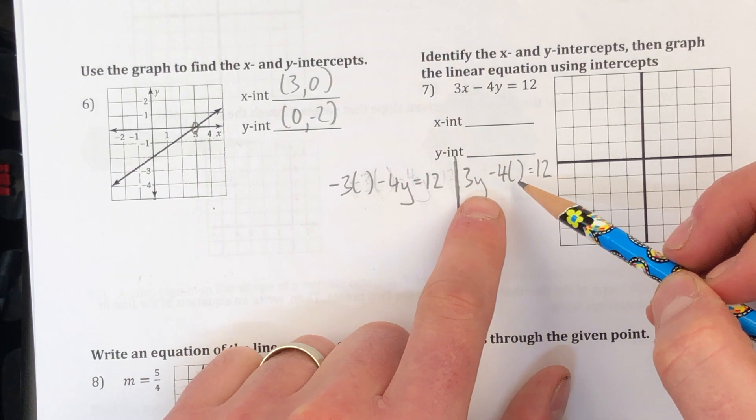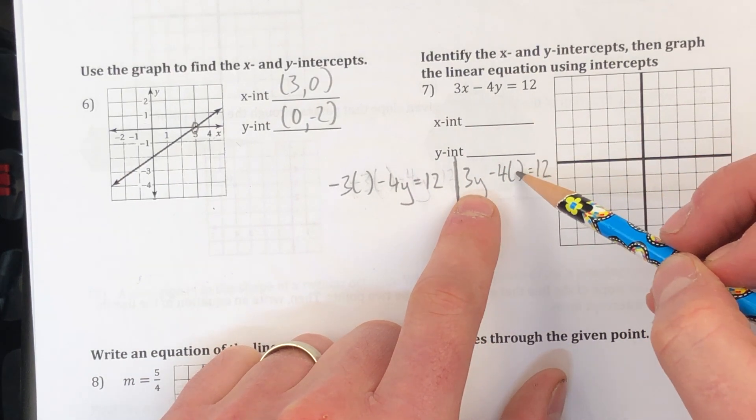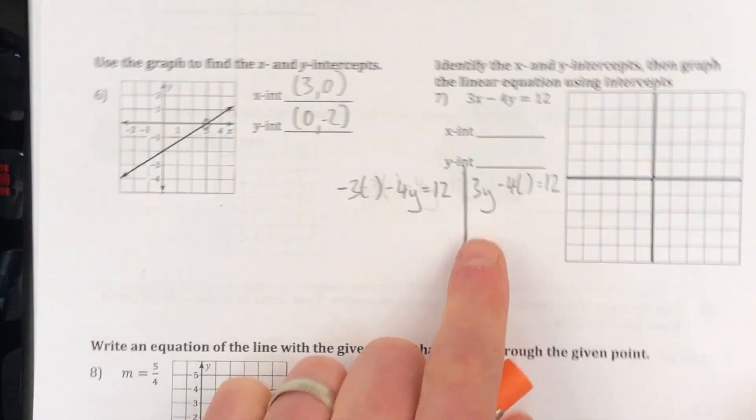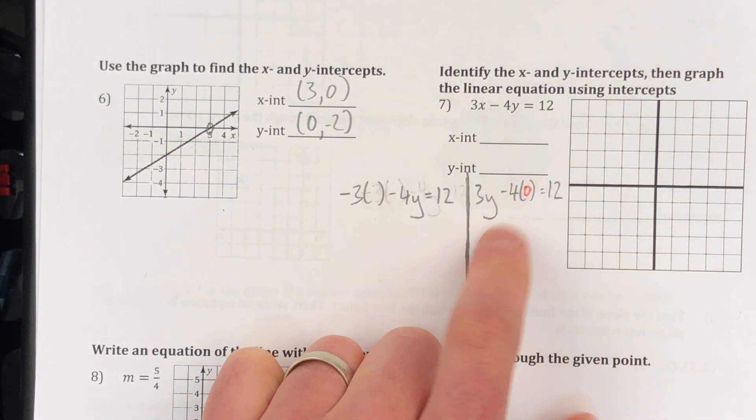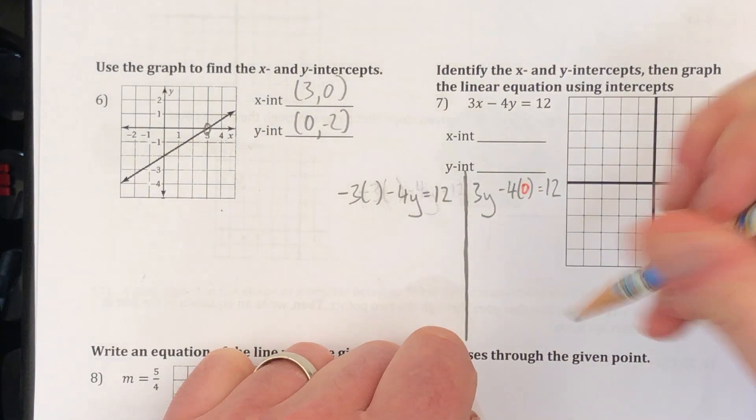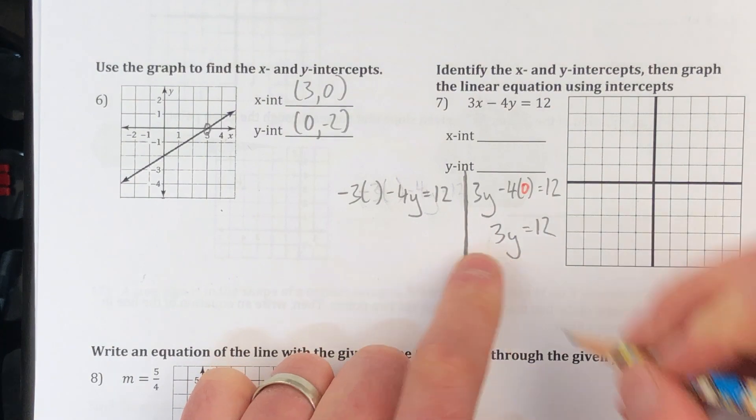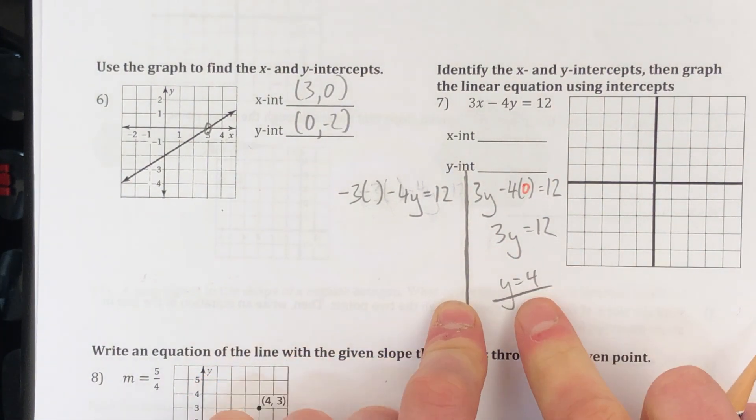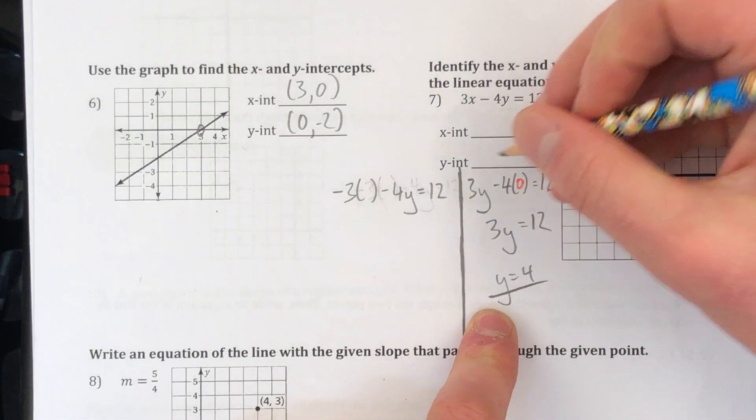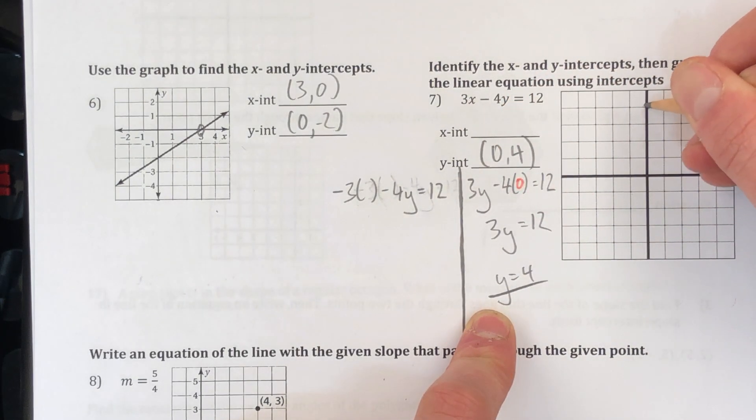So to find the y-intercept, I'm going to plug in 0 for x. I've already set this one up. I'm going to plug in 0, which makes it kind of makes this whole term just disappear. This becomes 3y equals 12. Divide both sides by 3. Y equals 4. There's my y-intercept. Just found my y-intercept. That would be 0, 4. 1, 2, 3, 4. There's my y-intercept.